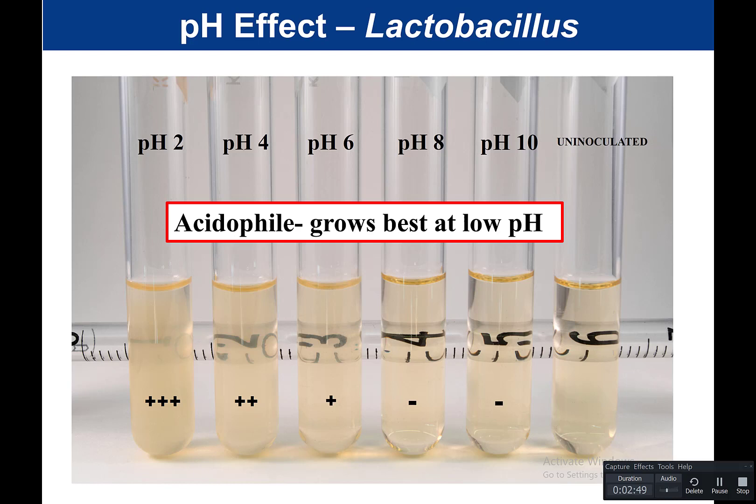Because this bacteria grew better at the acidic pH, we call this organism an acidophile. It grows best at low pHs — in this case at pH 2, and up to about pH 6. After that, the bacteria can't grow outside of that range. Lactobacillus acidophilus is a bacteria used to make yogurt, and it grows best under these acidic conditions.